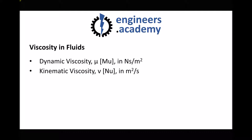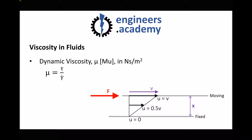Let's discuss dynamic viscosity first. Dynamic viscosity has the Greek letter mu and it can be found by doing the shear stress within the fluid divided by something called the shear rate. In this diagram we have a fixed plate at the bottom and a plate that's free to move at the top, with fluid in between. If we want to move the top plate at a given velocity we're going to need to apply a force.